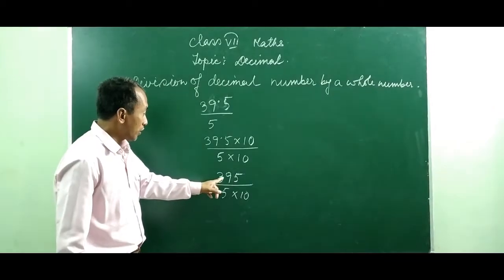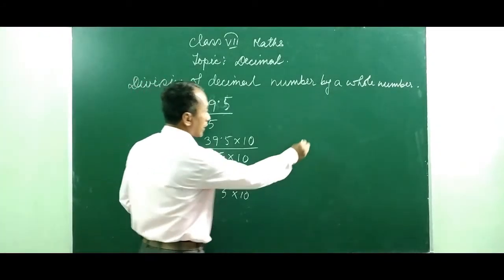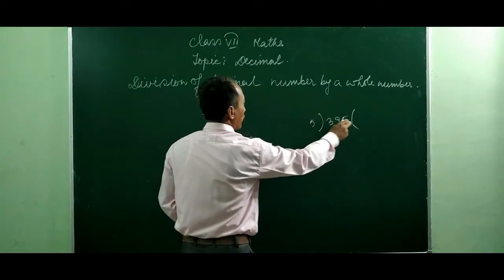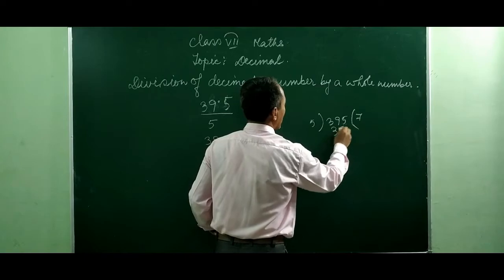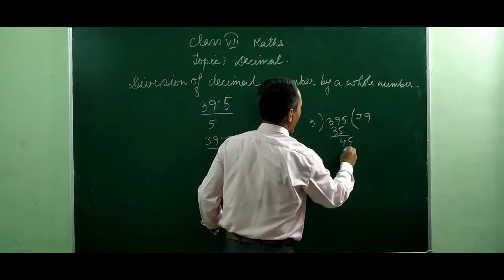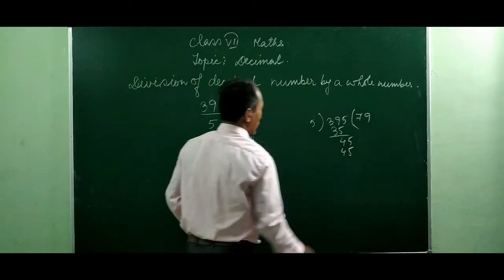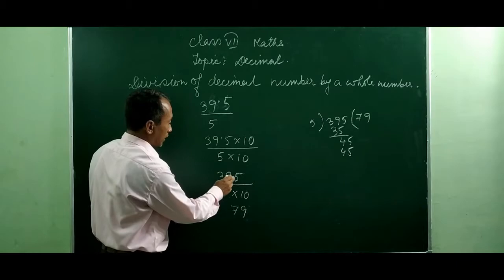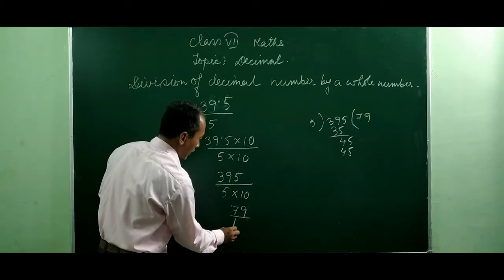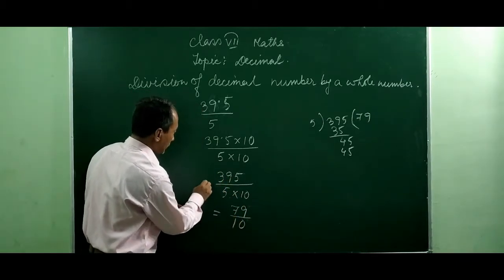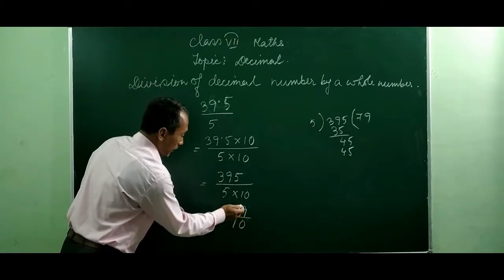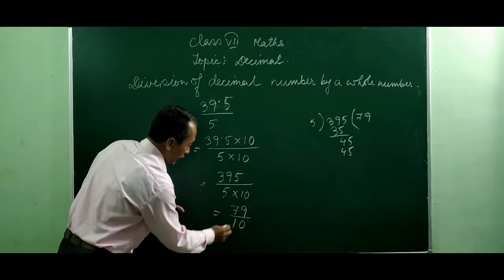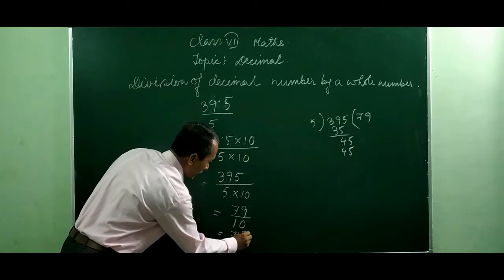Now divide 395 by 5. Here 395 divided by 5: 5 sevens are 35, 5 nines are 45, so it becomes 79. So 5 divides 395 to give 79. It is then 79 divided by 10. Dividing by 10, count 1 as the decimal place and 0 as the digit, so you place the decimal here to get 7.9.